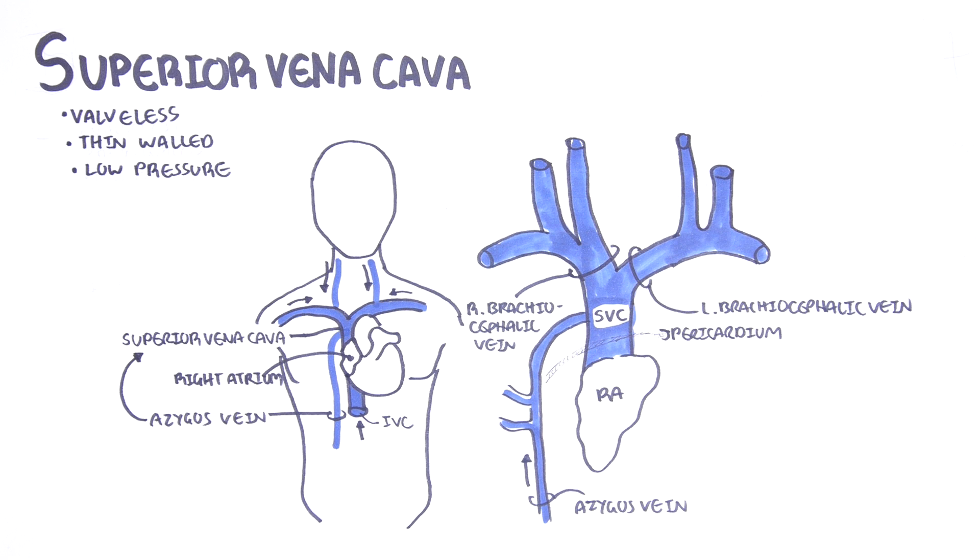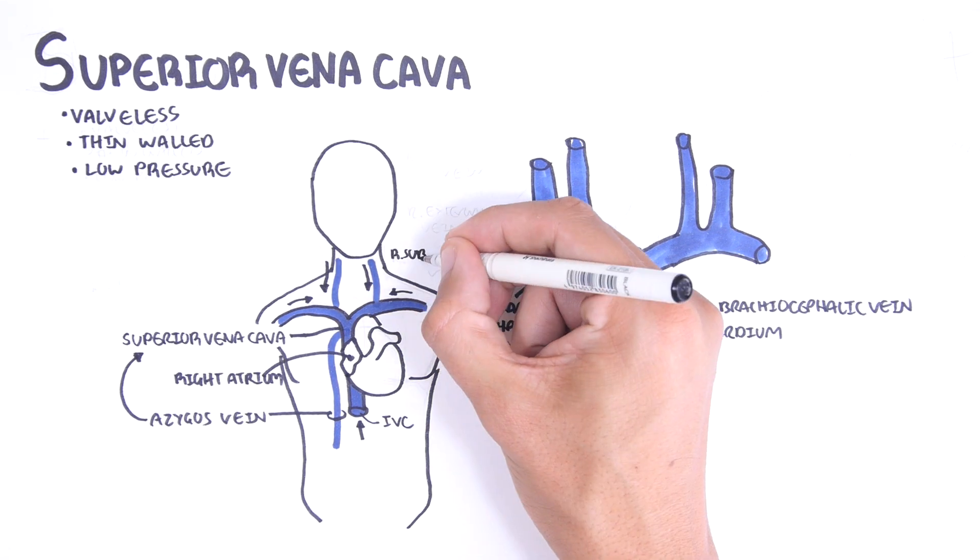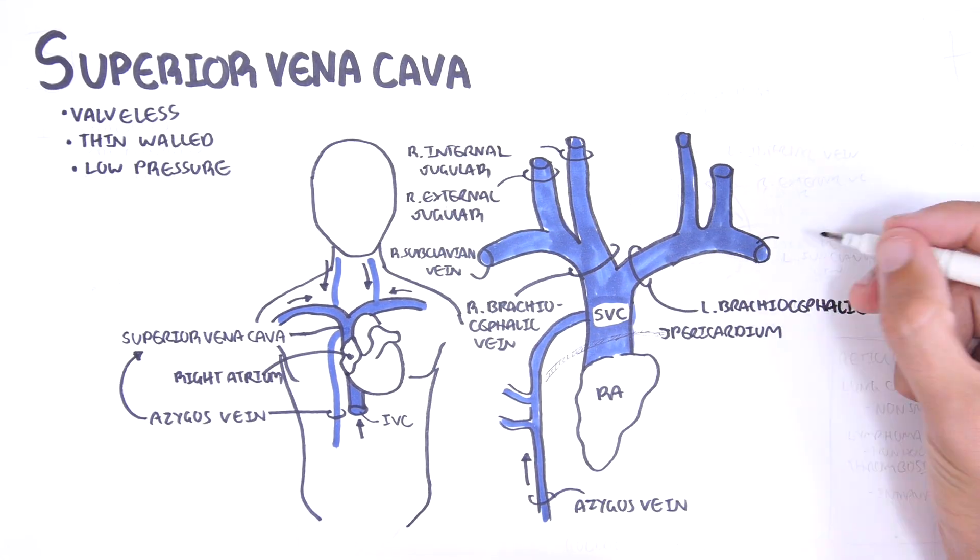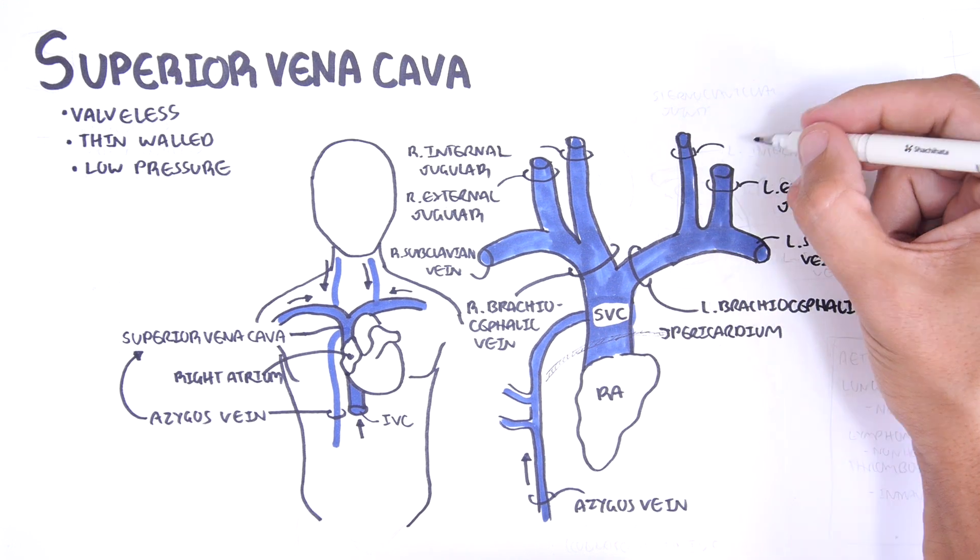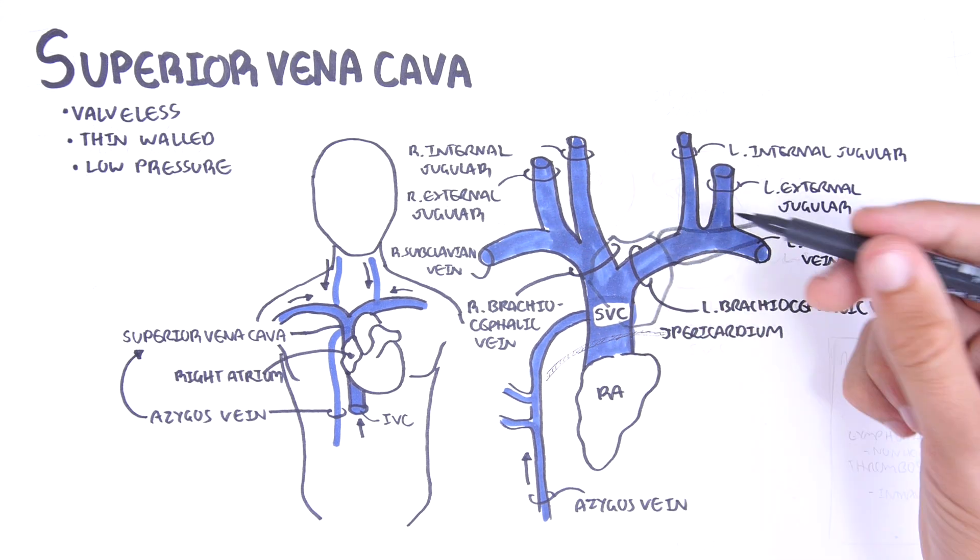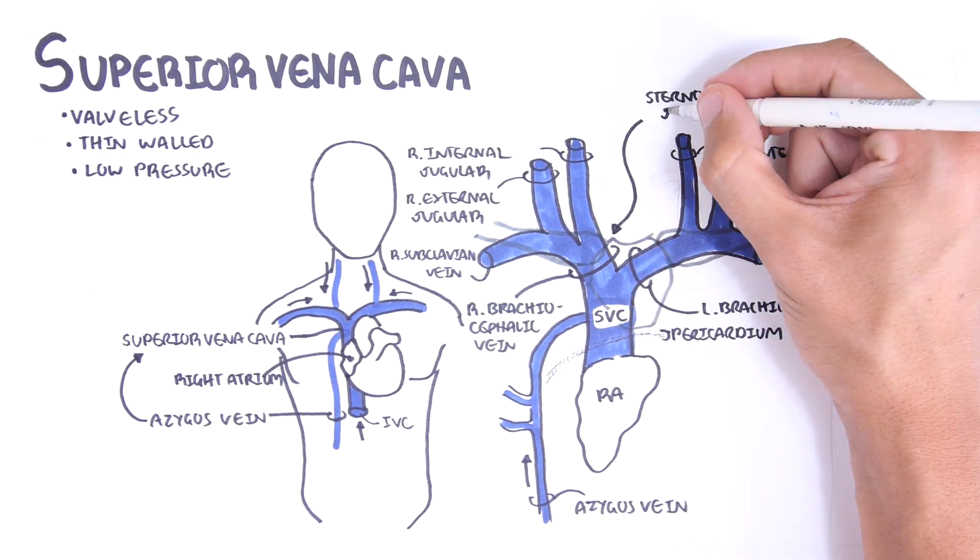The superior vena cava is a large valveless venous channel formed by the union of the brachiocephalic veins. The brachiocephalic veins are formed at the confluence of the subclavian and internal jugular vein. The convergence of the right subclavian and internal jugular vein occurs behind the sternoclavicular joint.